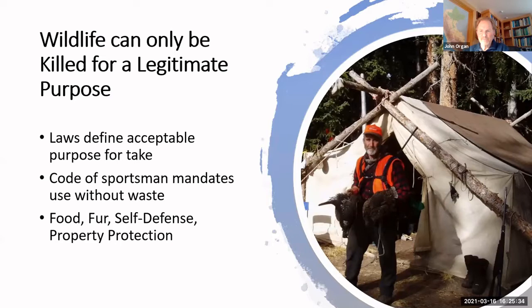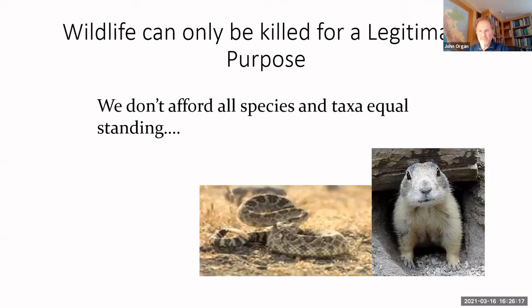The fourth tenet is that wildlife can only be killed for a legitimate purpose. For hunting and trapping, laws define what species can be taken and under what conditions. Wanton waste laws in many states require hunters to utilize the meat. For most other wildlife, laws specify when, where, and what permissions apply to the killing of wildlife — typically involving self-defense, property protection, and more recently culling for disease control such as chronic wasting disease. In some cases we have seen activities that on their face violate this tenet, such as rattlesnake roundups and long-range rifle shooting with prairie dogs as targets. In recent years, we've seen a reduction in sanctioning of rattlesnake roundups, and I think this bodes well for the conservation of these species.